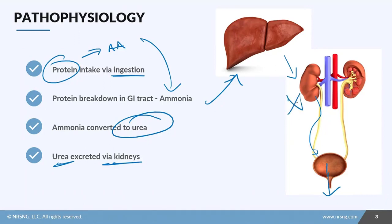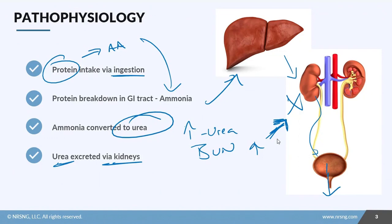So what happens if you have a breakdown in this process? If the liver is working, the ammonia gets converted to urea — you're going to have an elevation in that urea. We detect this on labs through the blood urea nitrogen test. If you have an elevation in the BUN, it's indicative that there's a problem primarily in the kidneys, though there are some other reasons we'll talk about in a moment.